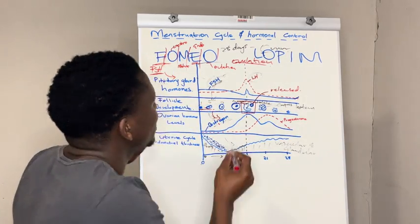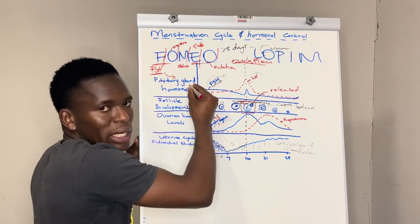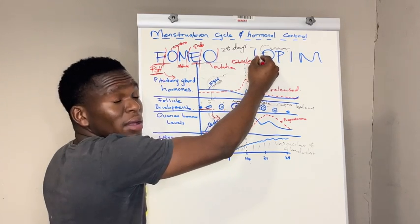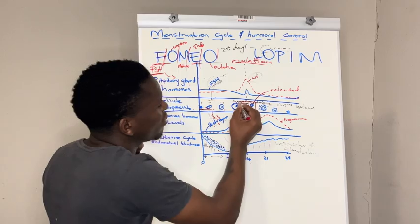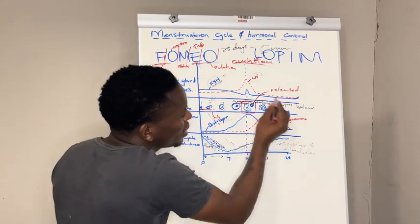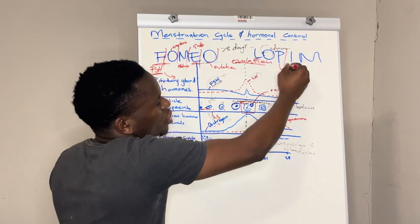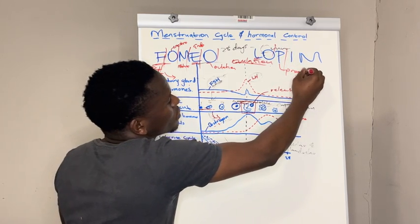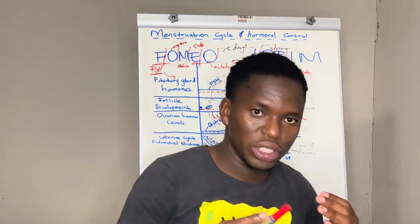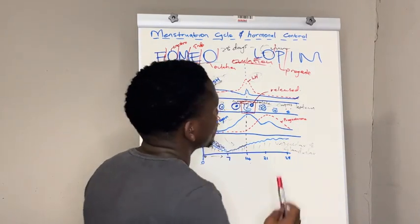As ovulation takes place, the hormone luteinizing hormone will be secreted by the pituitary gland. The luteinizing hormone will convert the Graafian follicle — our matured follicle — into corpus luteum. The corpus luteum will secrete the hormone progesterone. If progesterone has been secreted, progesterone will make the endometrial lining more glandular and vascular.